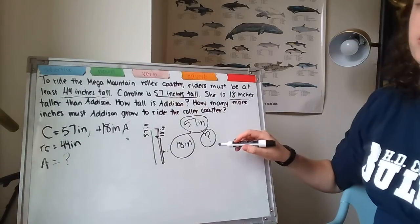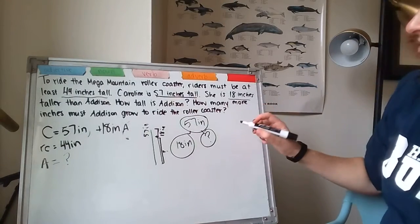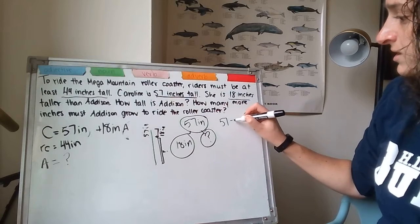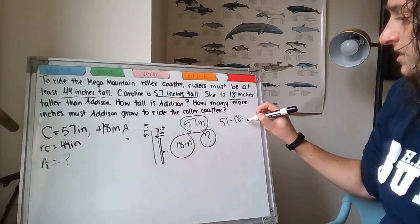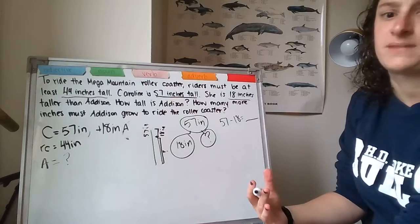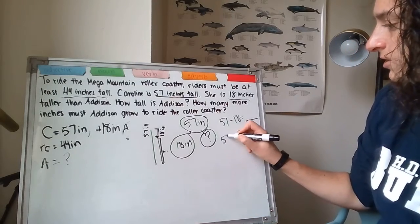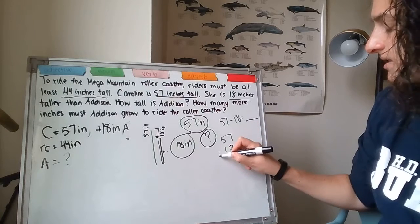I know that if I'm looking for a part, I want to be using subtraction. So, my equation is going to be 57 inches minus 18 inches equals Addison's height. So, let's do this the vertical way. 57 minus 18.